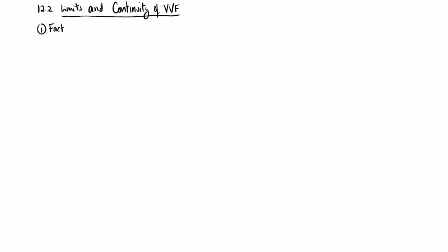So I'm going to list these as just two basic facts. We'll look at two examples. The first fact is the limit of a vector-valued function can be defined by taking the limits of the component functions.